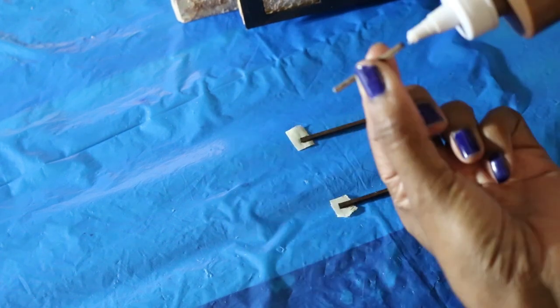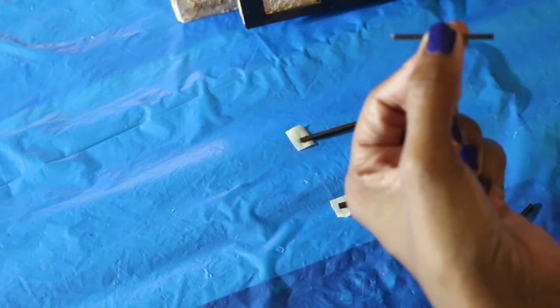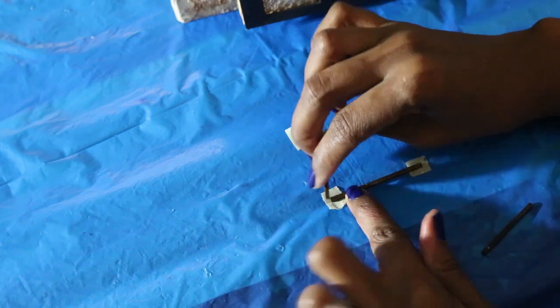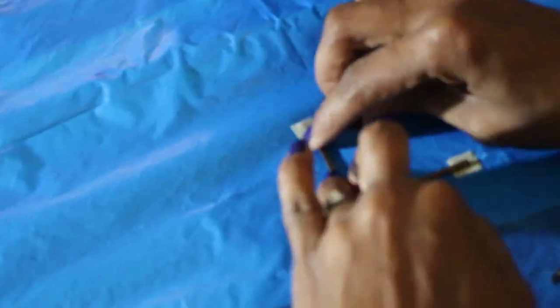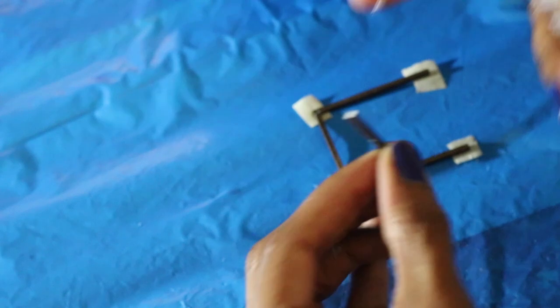And then I put glue on the ends of the short pieces. I put the pieces together, make sure that it's square, and then set it aside to dry.